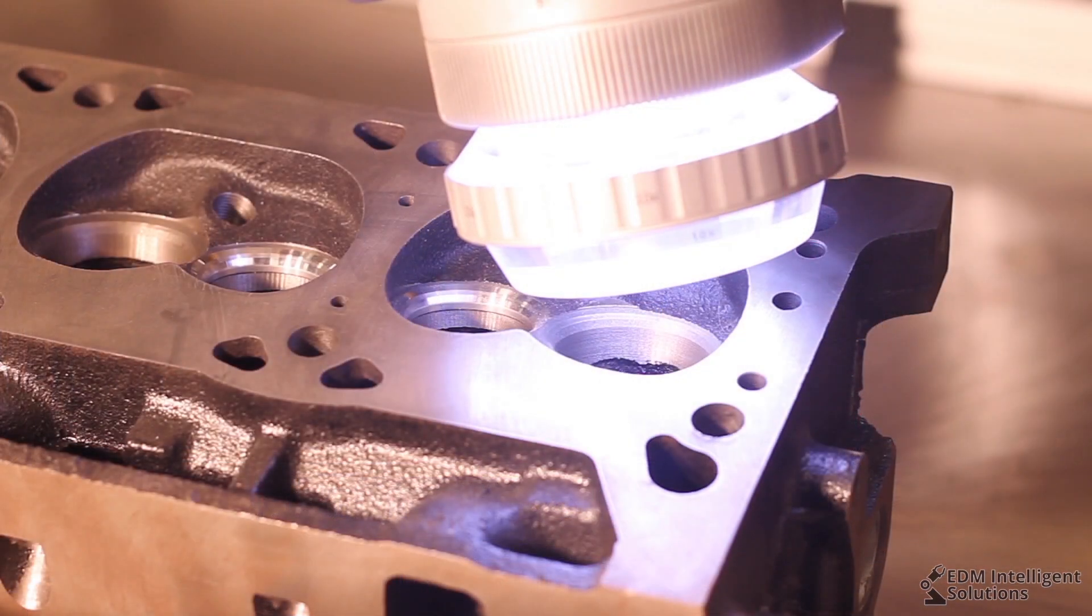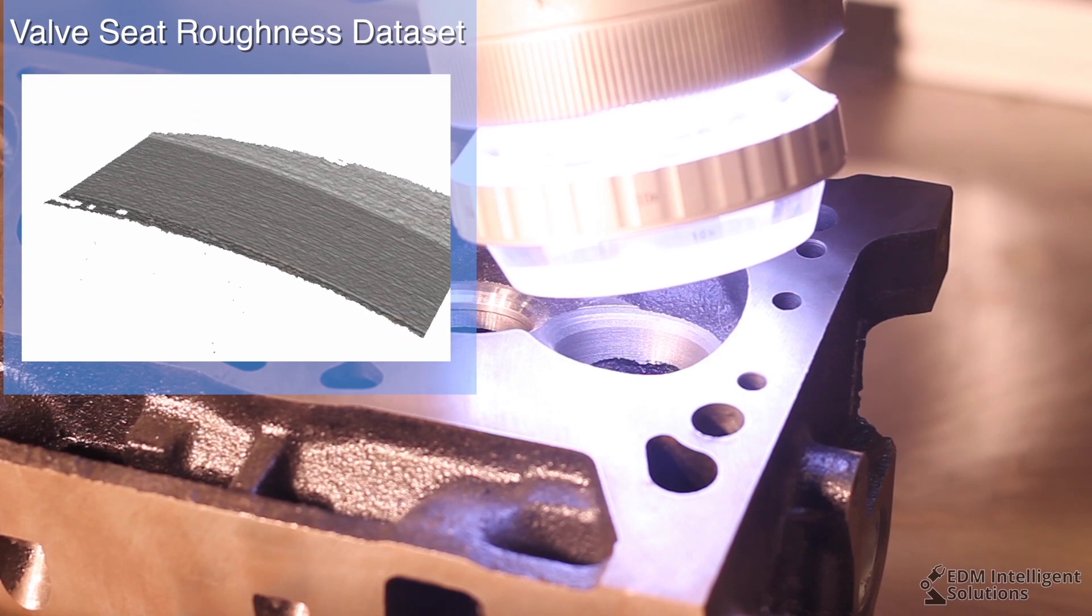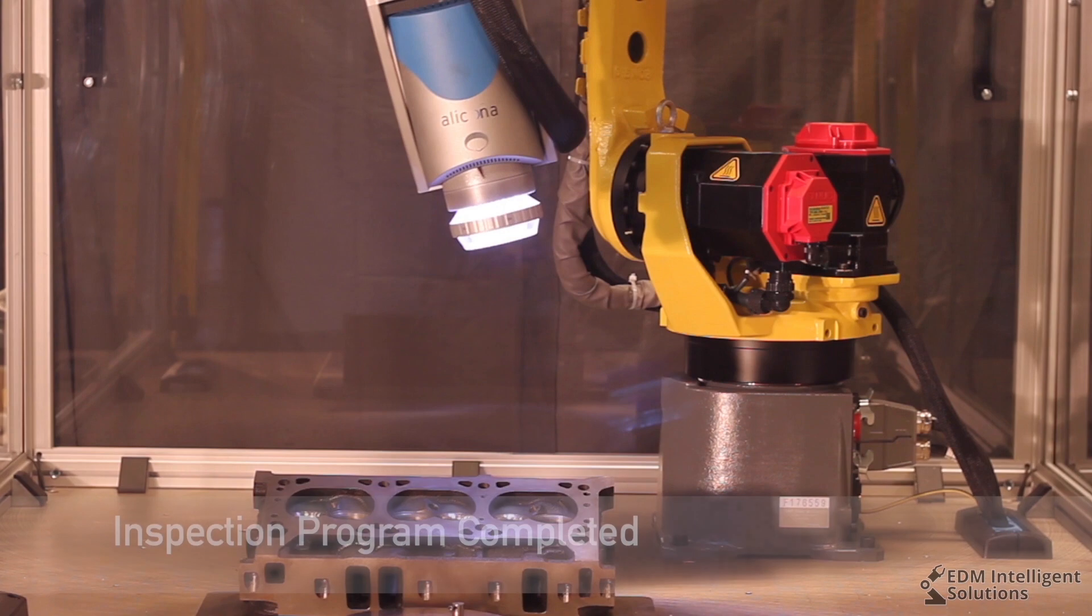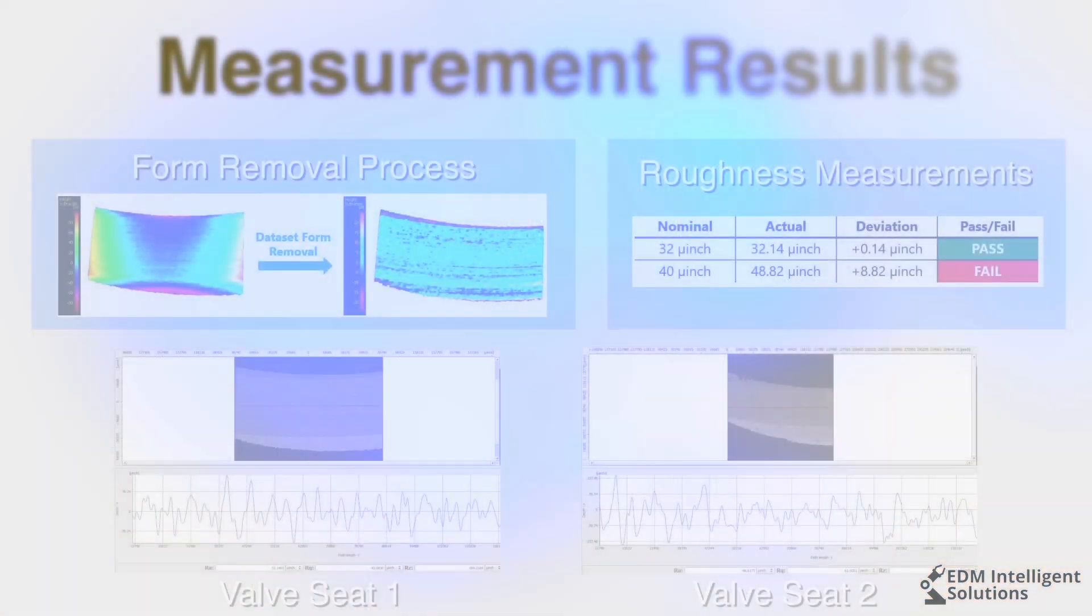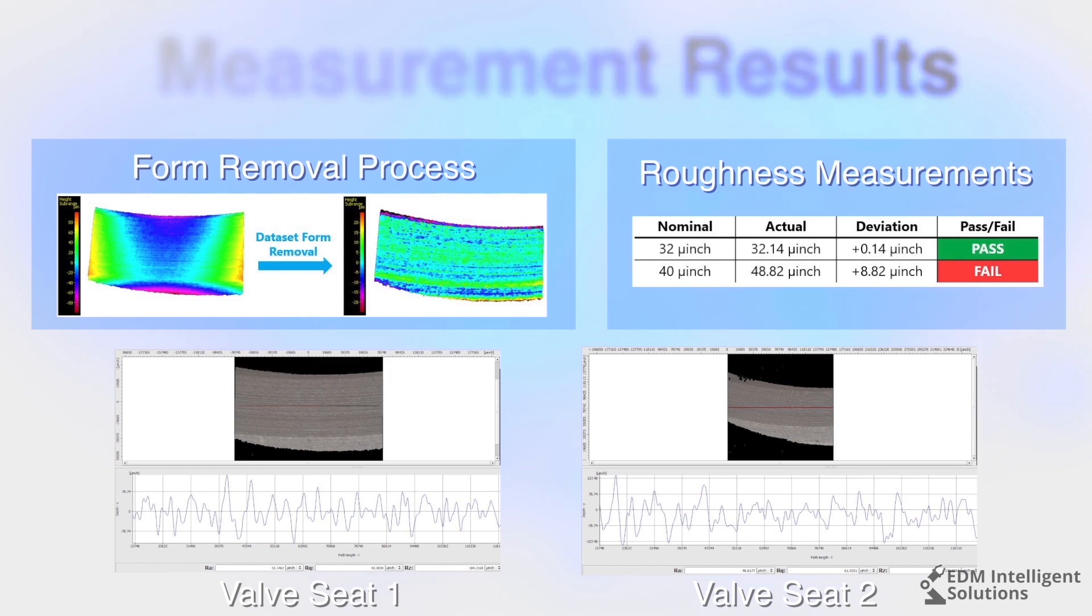Each 3D dataset that is captured allows the user to inspect form, roughness, and GD&T all in one system. The data that is gathered using the RSH-M10 system allows users to improve manufacturing processes, thus reducing the amount of time required for quality control of production.